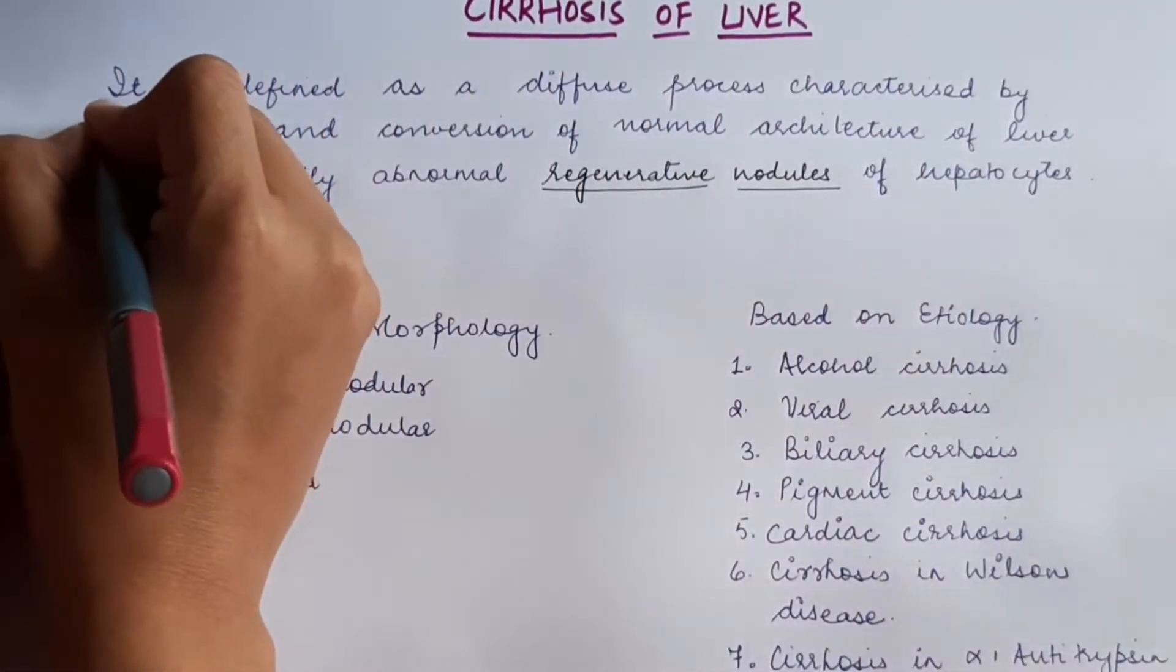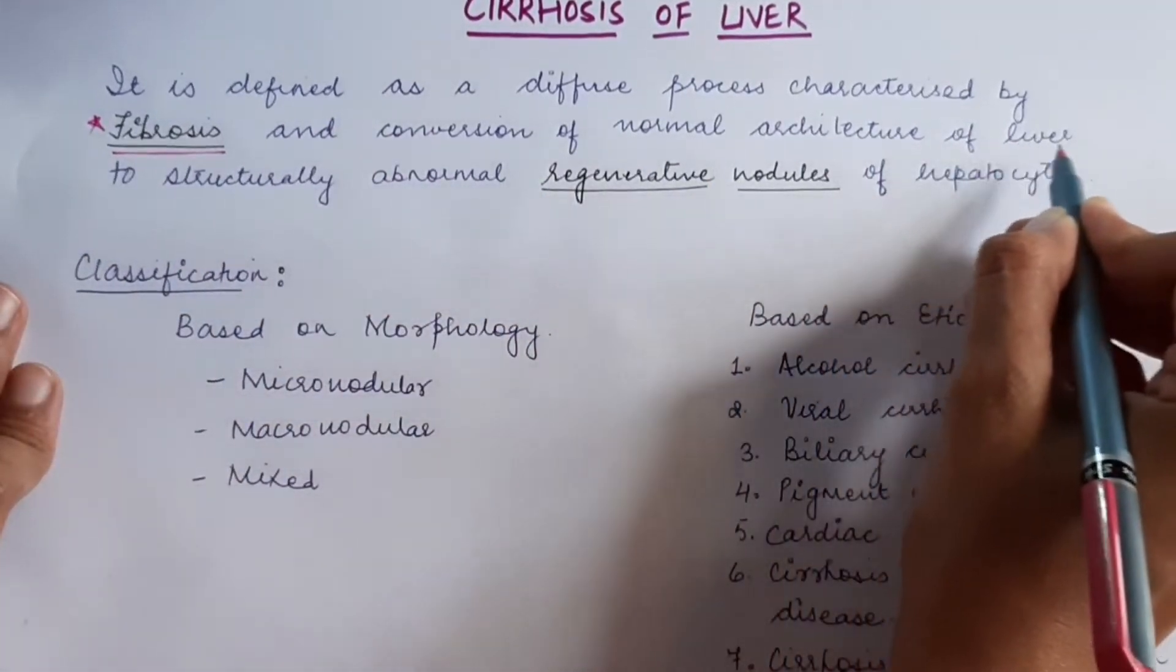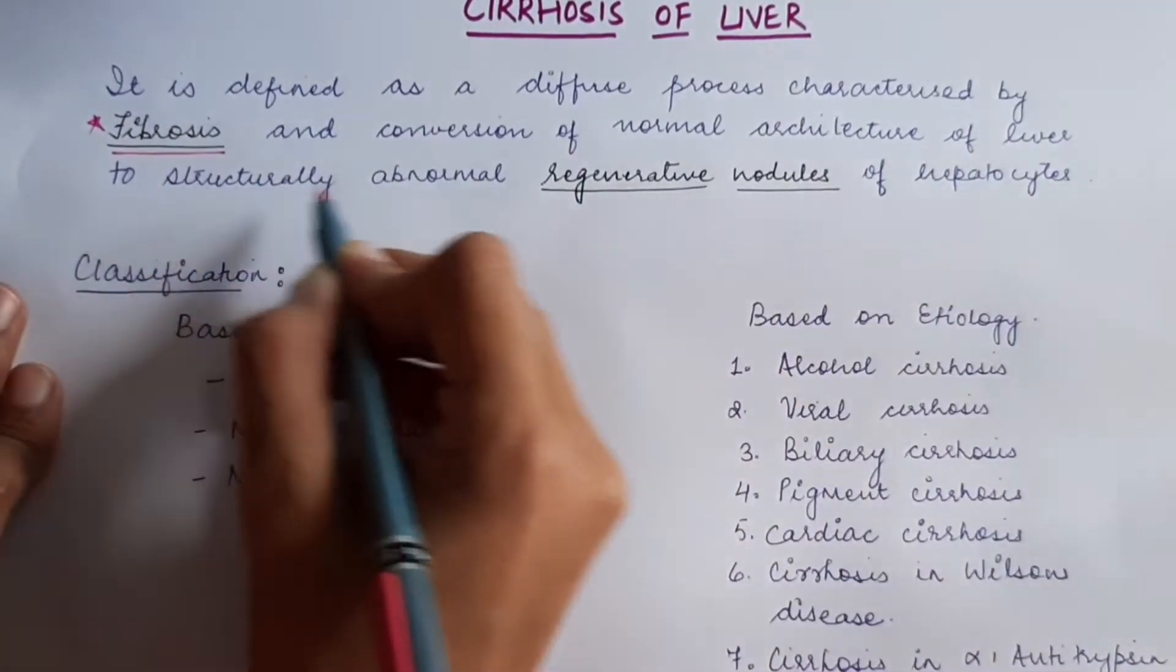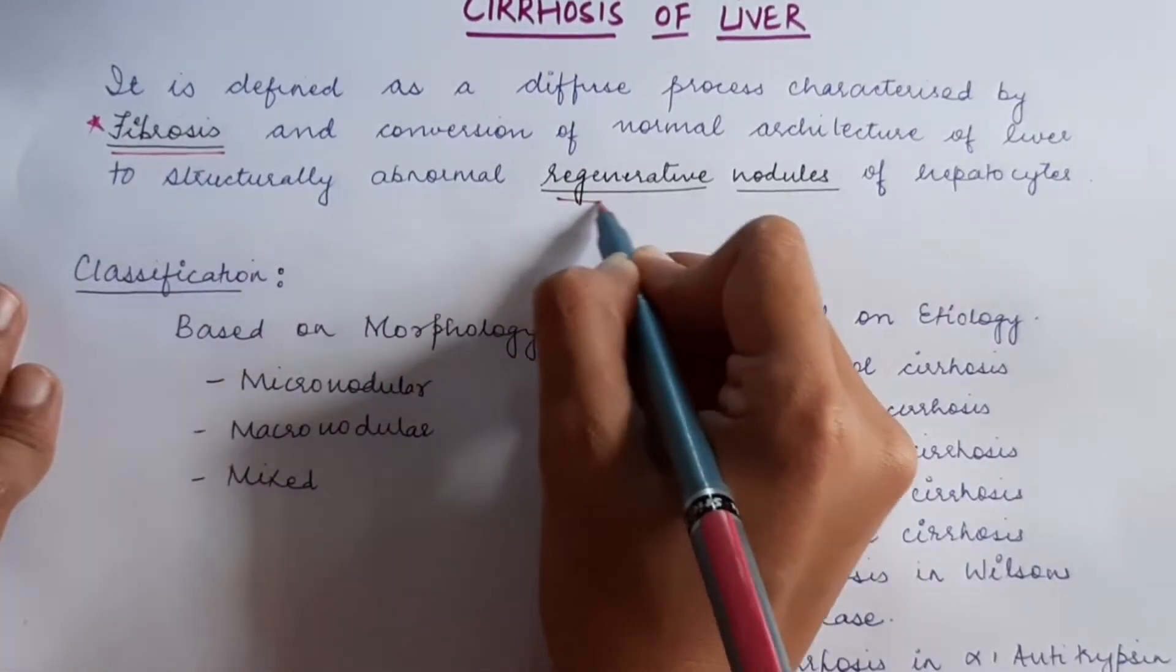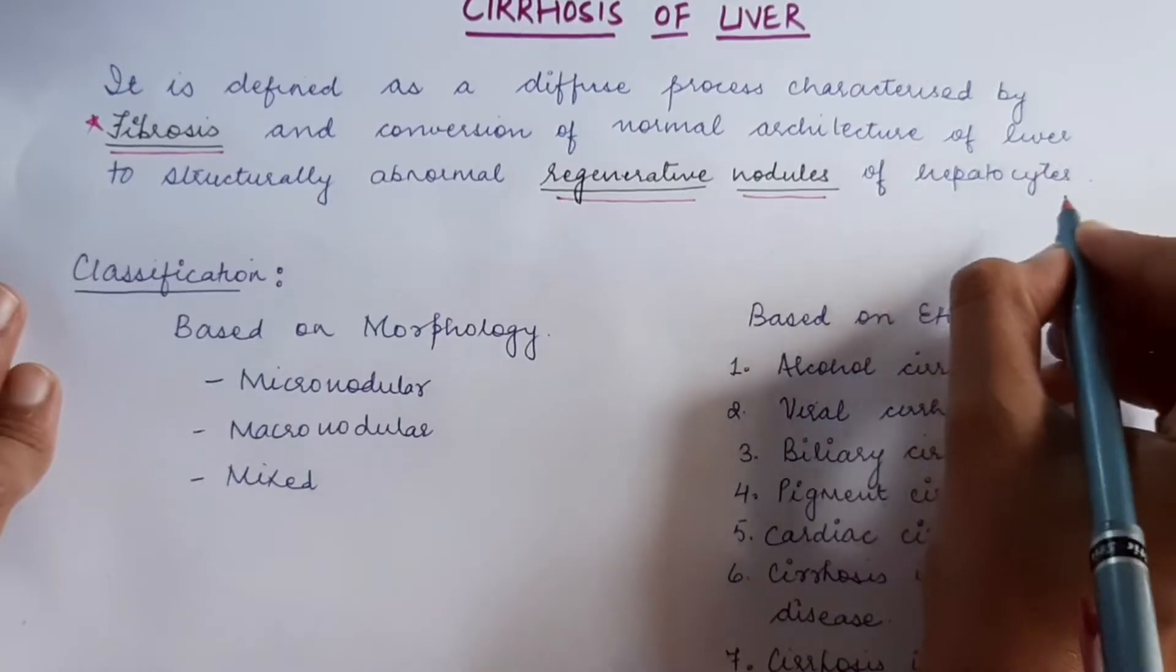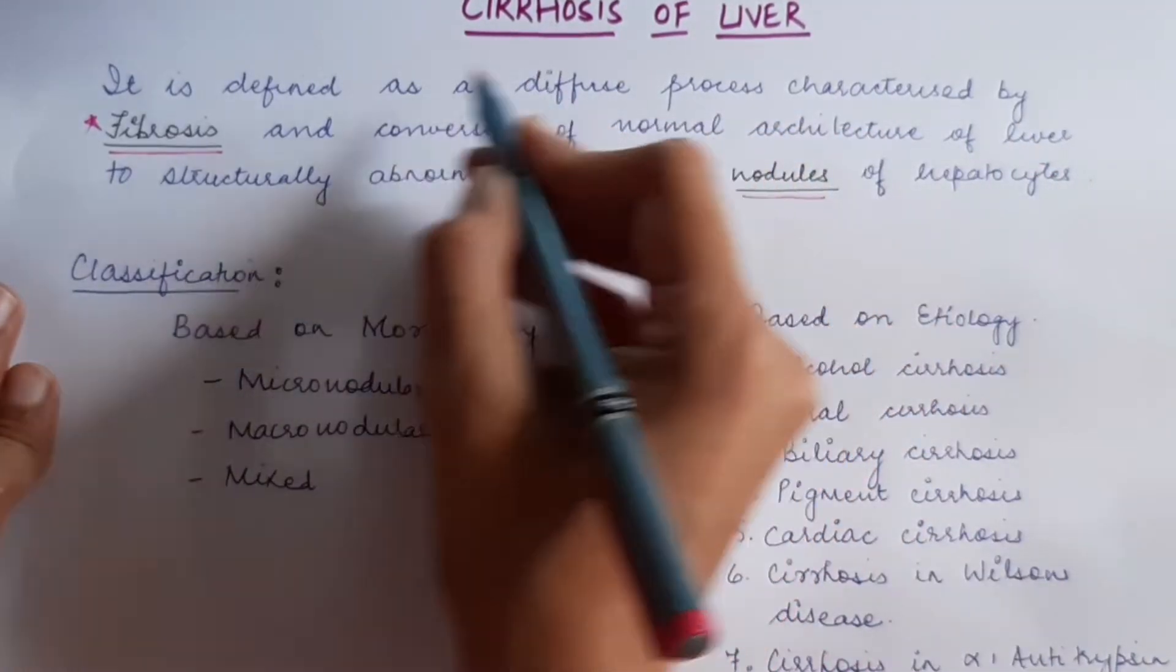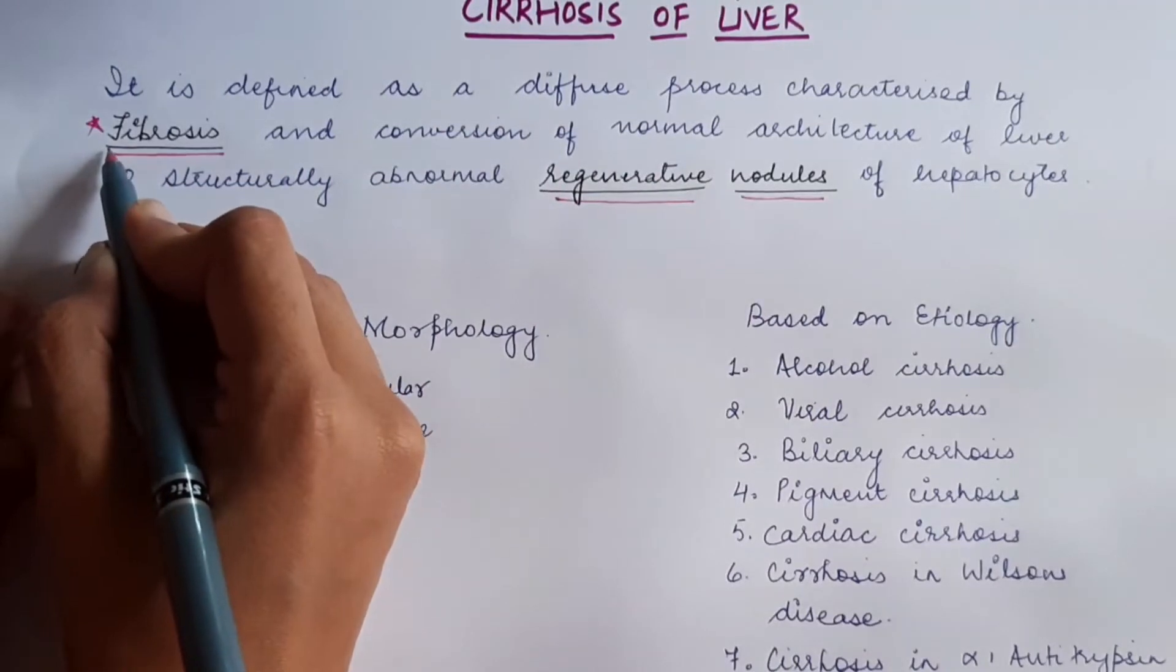fibrosis and conversion of normal architecture of liver to structurally abnormal regenerative nodules of hepatocytes. Basically, in the process of cirrhosis, we will see two changes. The first change is fibrosis,